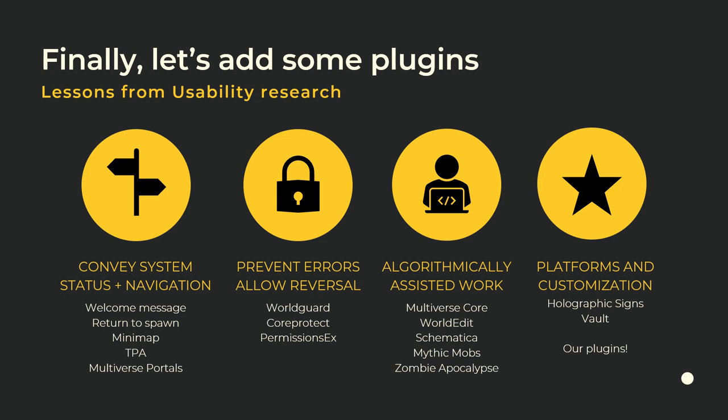There are lots of plugins to help users work more effectively — algorithmically assisted creation. Instead of placing one block at a time, you could select a line from one block to another and make all of them stone with a command. You start thinking about computational assistance that empowers you to solve problems faster and consider what can be automated. There's already a lot of that with redstone and farms in Minecraft, but there are tons of plugins for this too. Some plugins are just platforms — for example, holographic signs let you display floating text in the air.